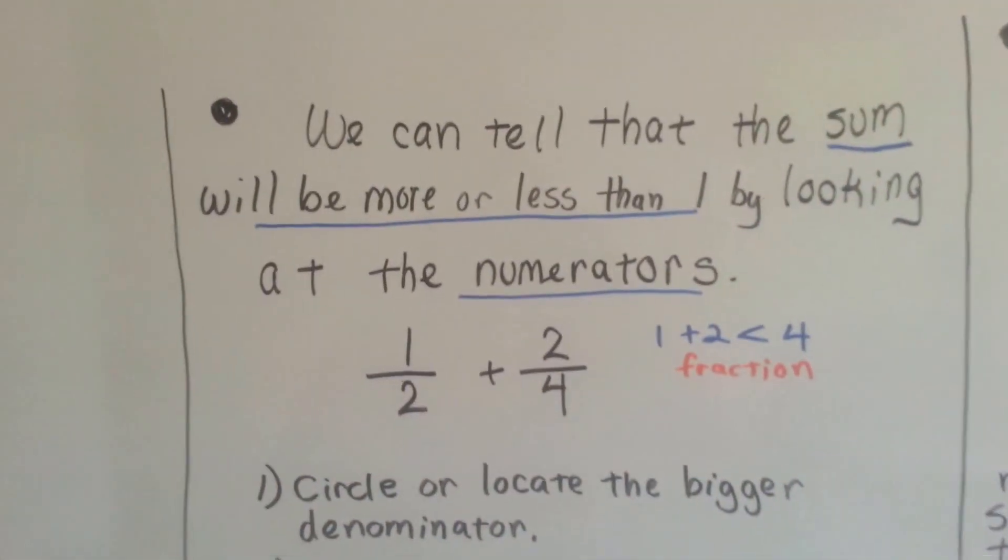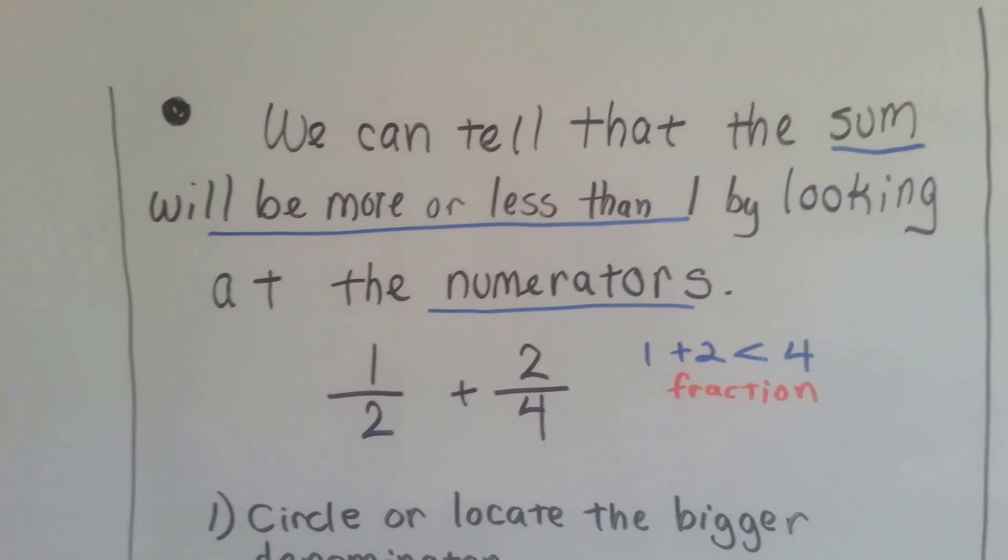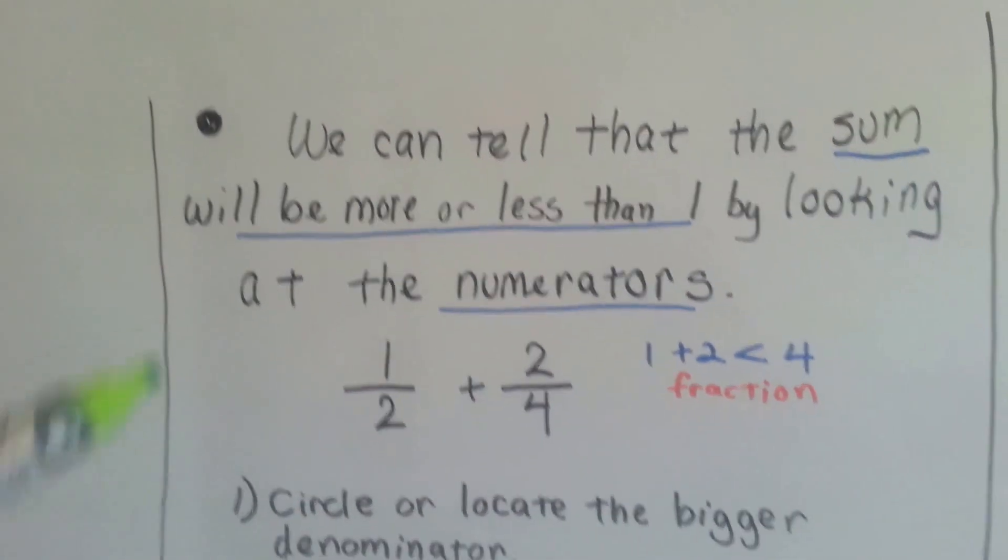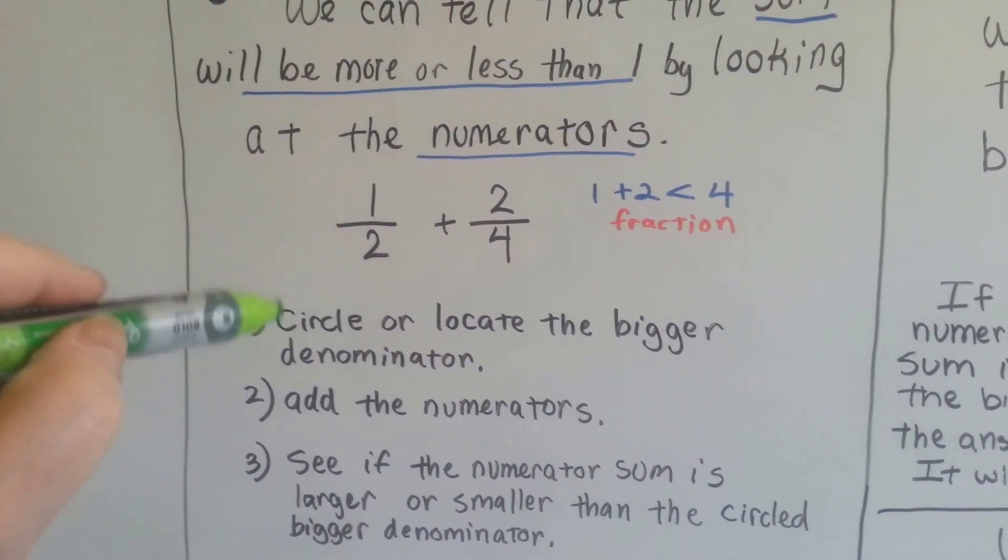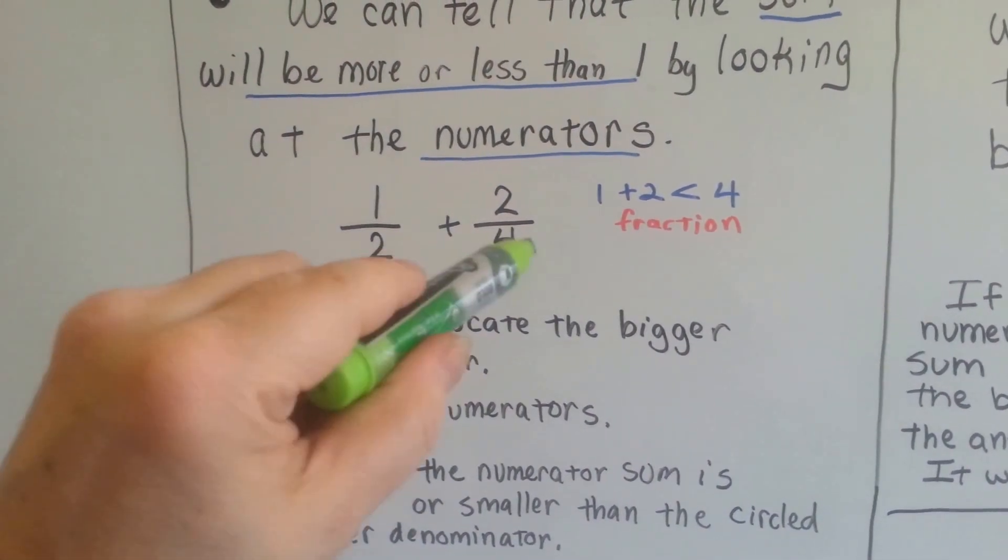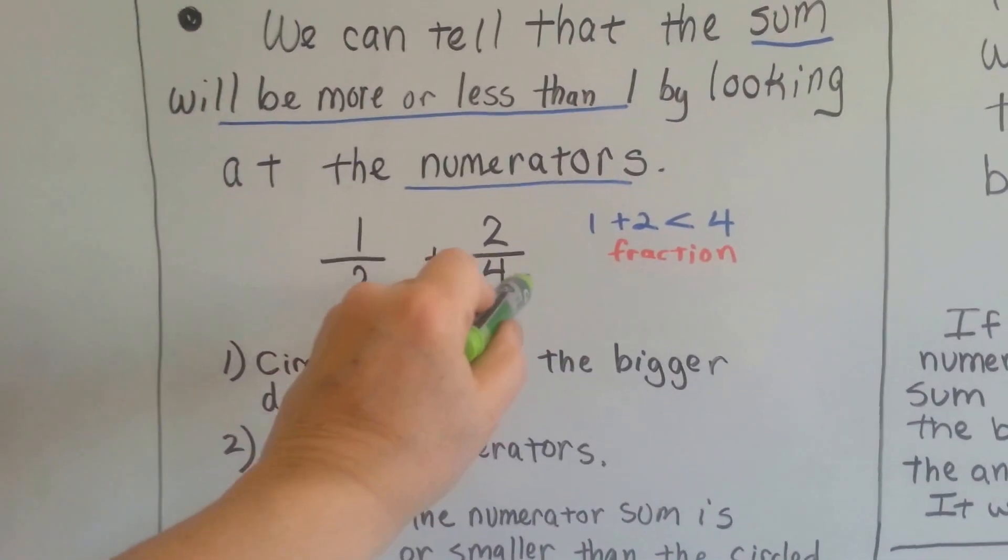We can tell the sum will be more or less than 1 by looking at the numerators. Here's what we do. We circle or locate the bigger denominator. So, which one is the bigger denominator? It's the 4.